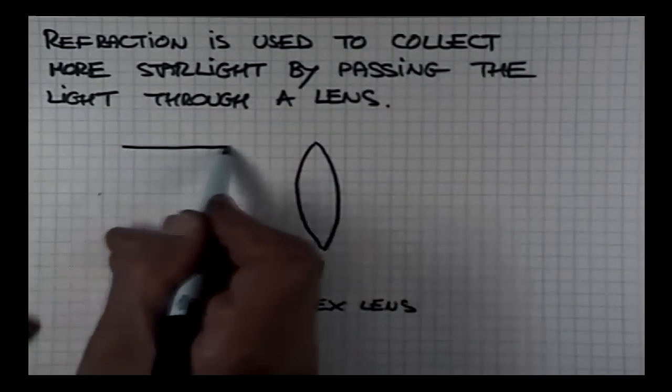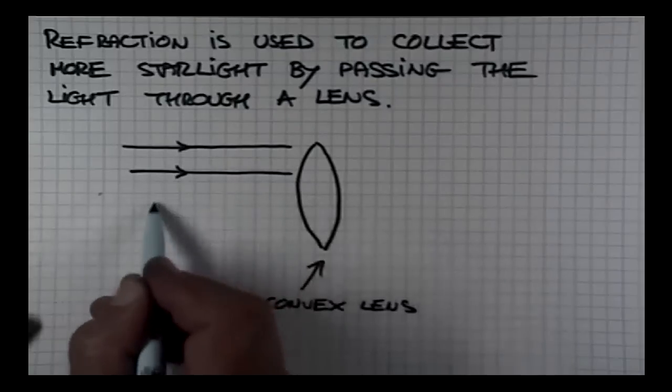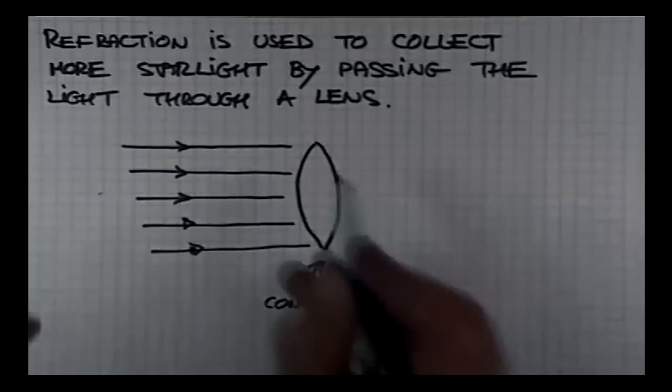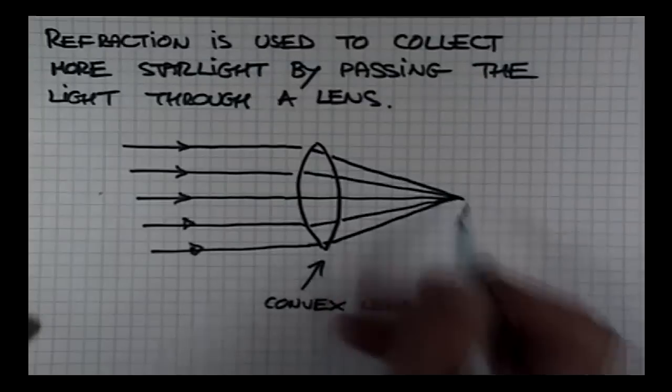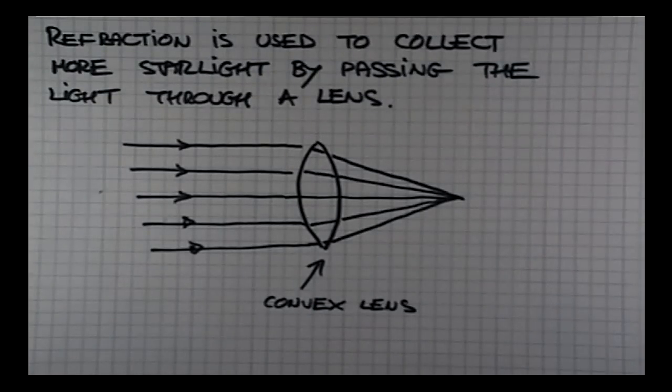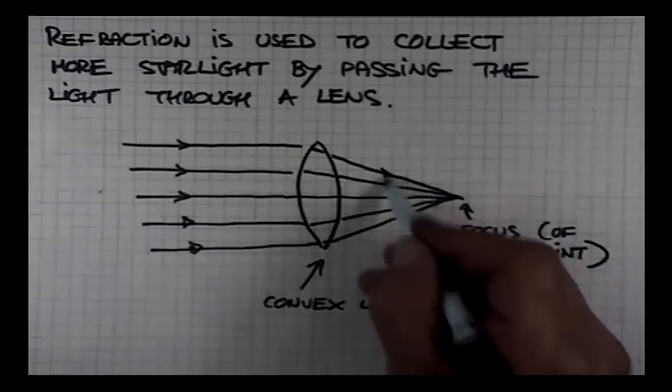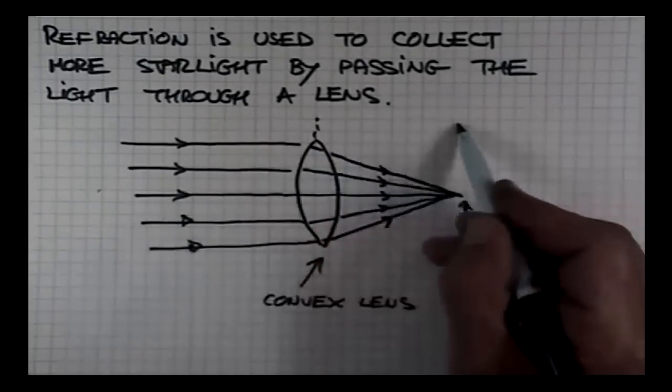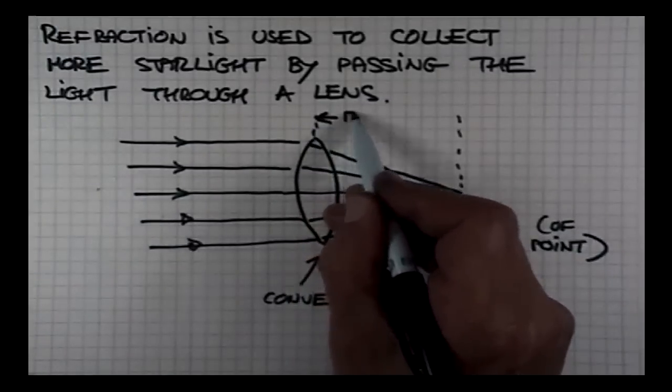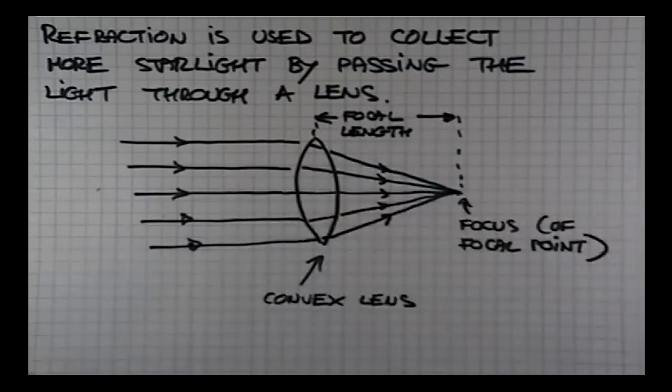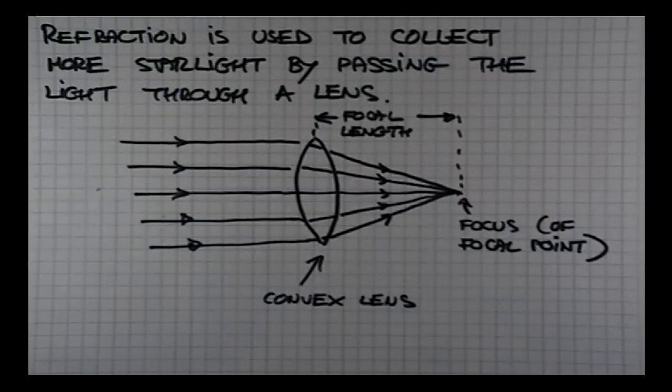The light rays arriving at the lens are all parallel to each other. Then each one of them is bent just by the right amount. All the rays are collected in this single point that is called focus or focal point. The distance between the lens and the focal point, this distance here, is called focal length. The focal length of a lens is the distance between the lens and its focal point.